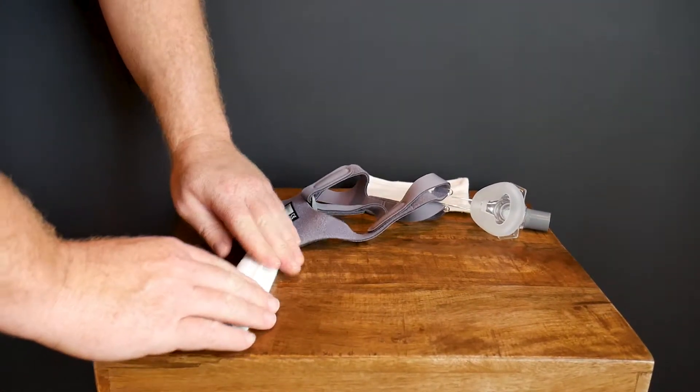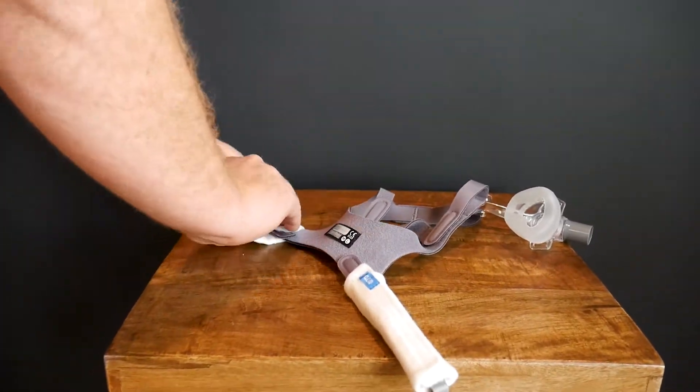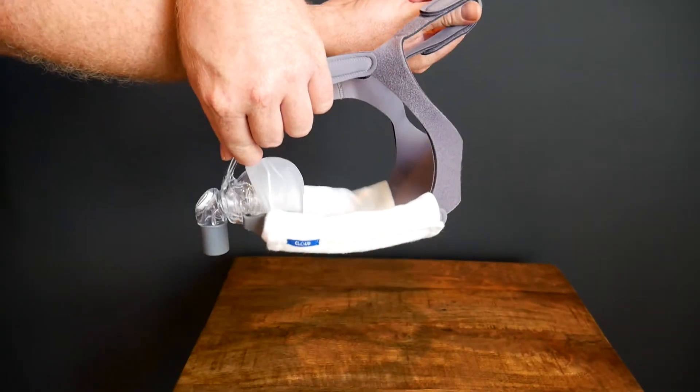Then, with the Velcro fasteners, secure the headgear covers around your face or forehead straps. Be sure the Cloud Tag appears right-side up when wearing.